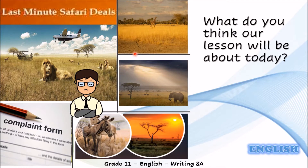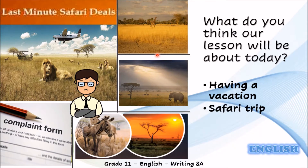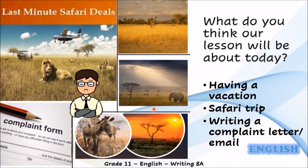So what is it about? Maybe it's about having a vacation. Where? On a safari trip. Then look at this guy. How does he look? He looks upset, maybe dissatisfied — maybe dissatisfied with the trip. That's why here you can see that there is a complaint form. So he is writing a letter or an email of complaint. Maybe he is dissatisfied with the trip.